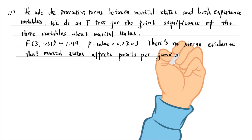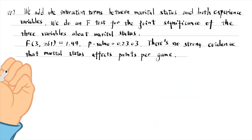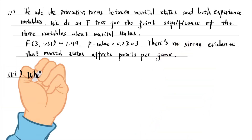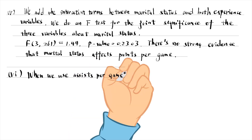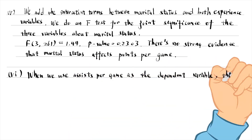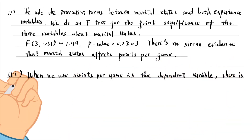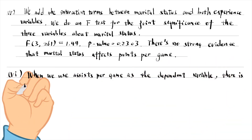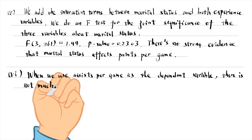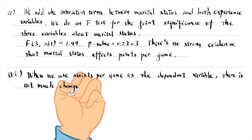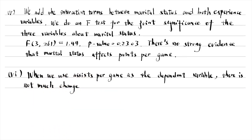For the last part, there is not much change when we use assists per game as the dependent variable. The coefficient on marital status is still not statistically significant at the 10% level, with a p-value of 0.15.